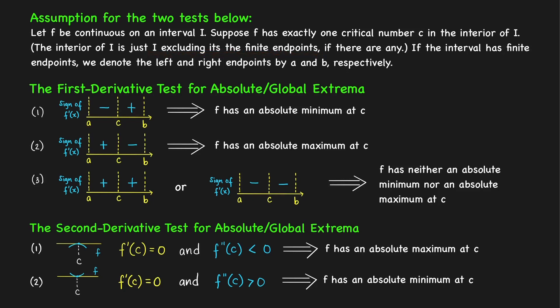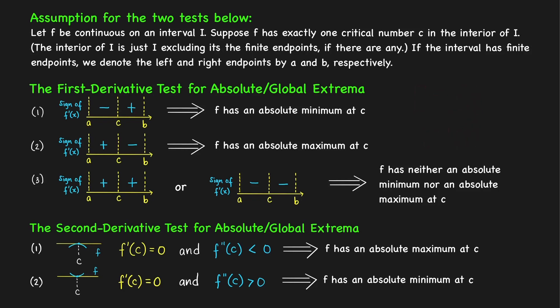For example, if you have the closed interval negative 5 to 3, then the interior is found by excluding the endpoints. So we consider the open interval negative 5 to 3 — this is the interior of the closed interval negative 5 to 3. We'll denote the left and right endpoints of the interval by a and b respectively.